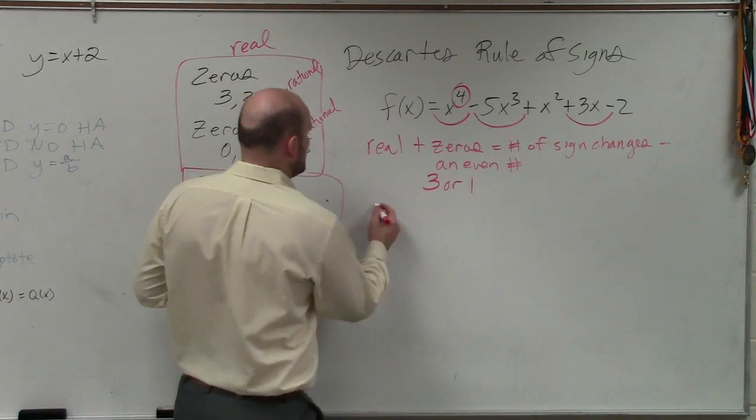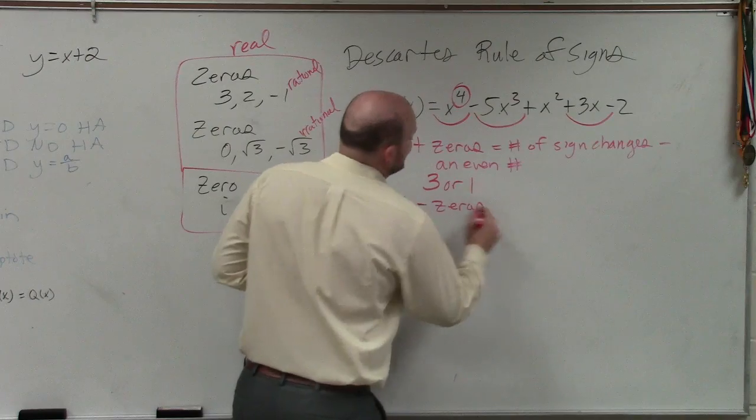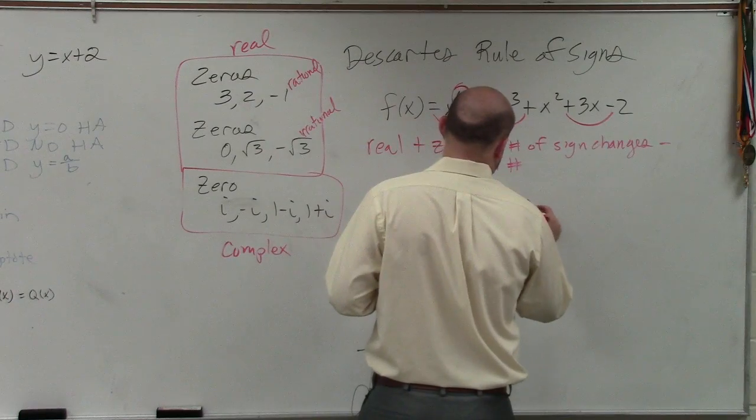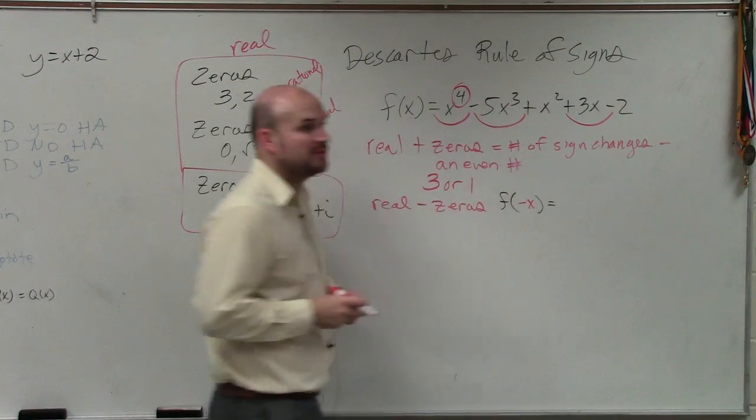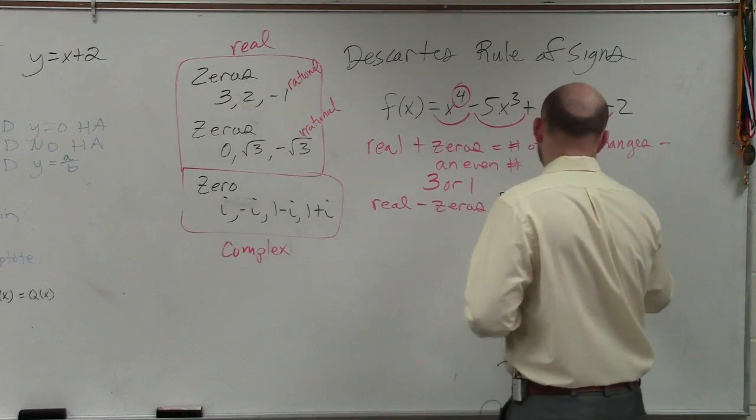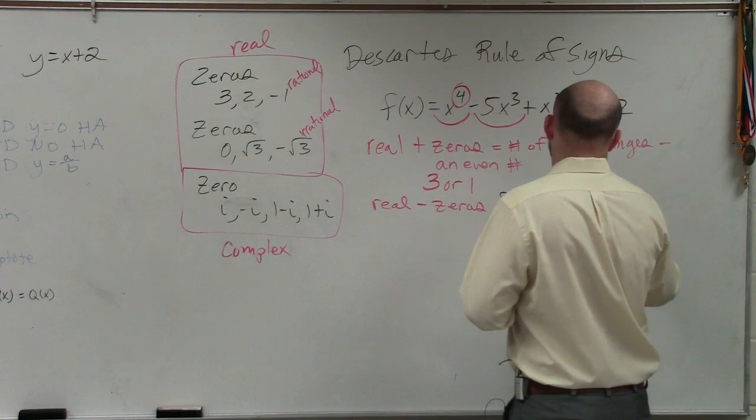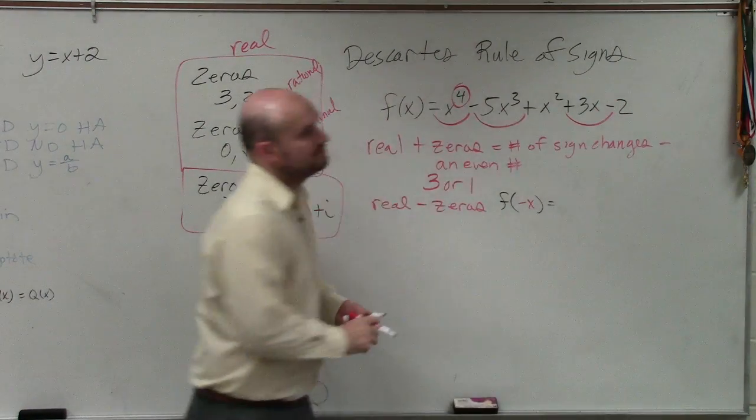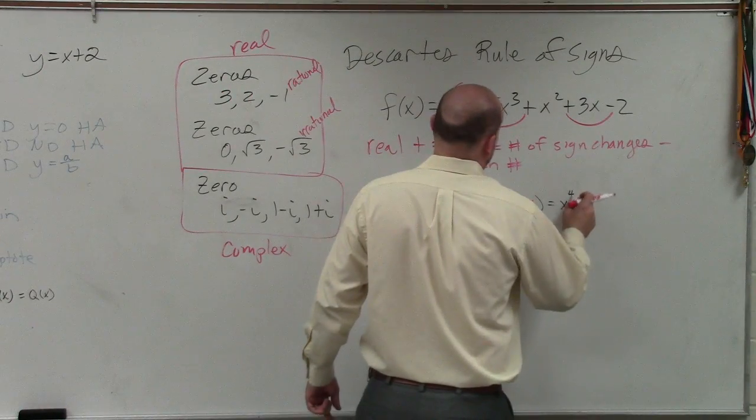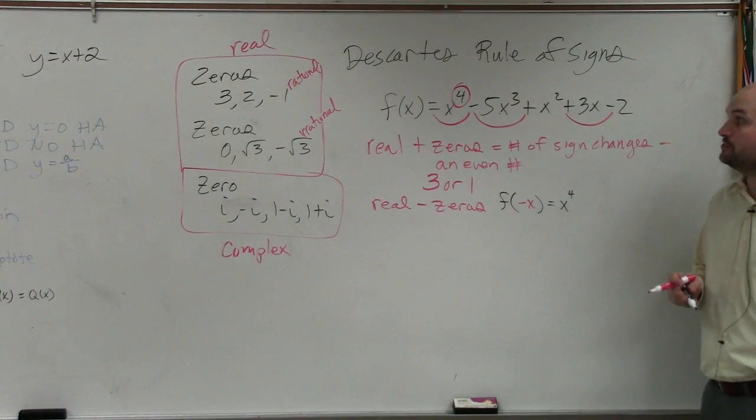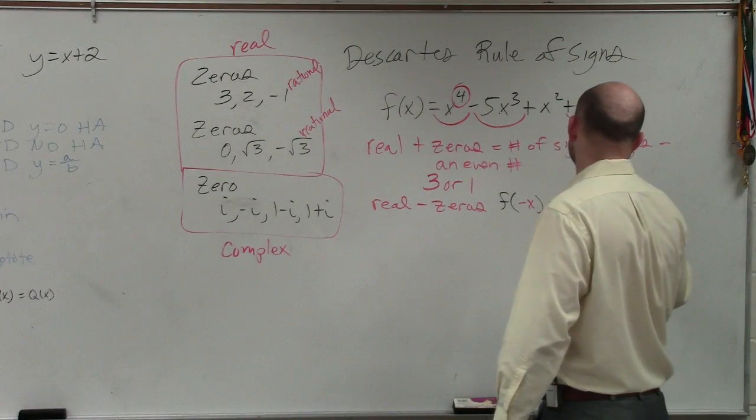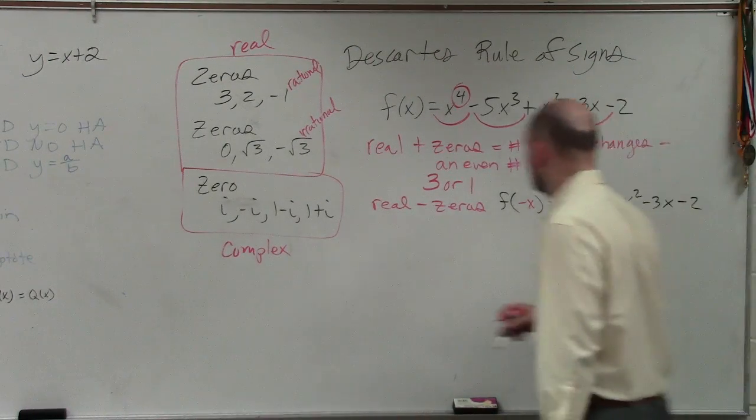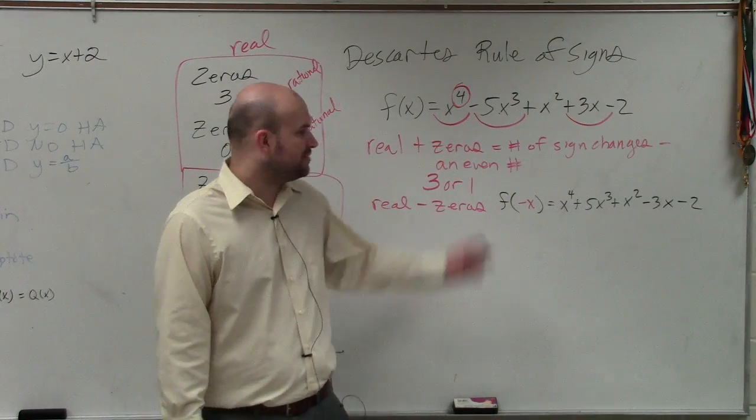That's the real positive. What about the real negative zeros? It's the same thing, but now we need to evaluate for f of negative x. So now we're going to plug in f of negative x. I don't got time, I've got to move on. So negative x to the fourth is just going to give you a positive x to the fourth. Negative x cubed is a negative x cubed times negative 5 is going to be a positive 5x cubed. This gives me a positive x squared minus 3x minus 2. Does everybody see what I did? I just plugged in negative x and then simplified.